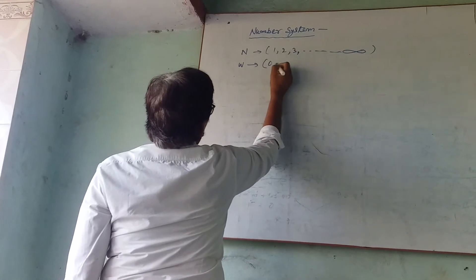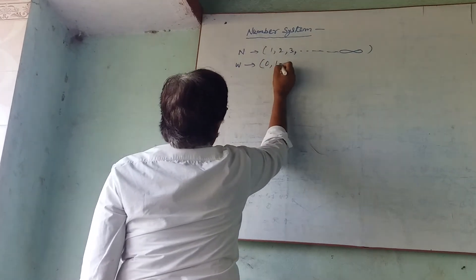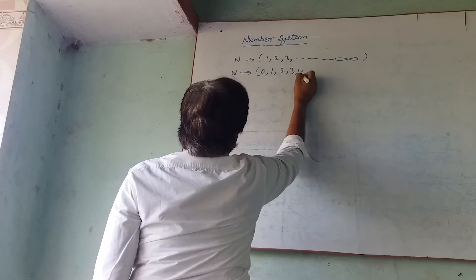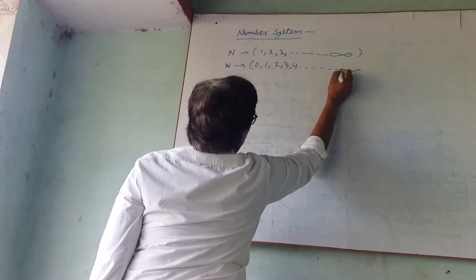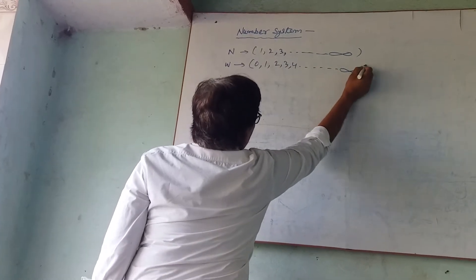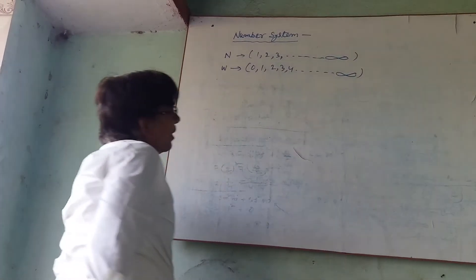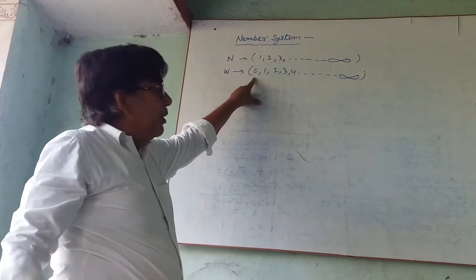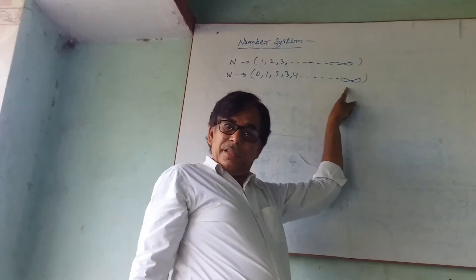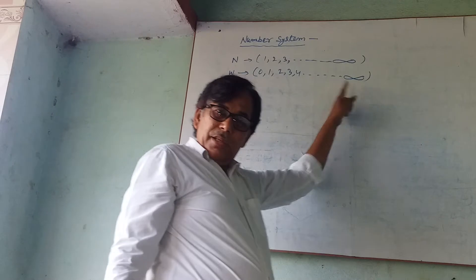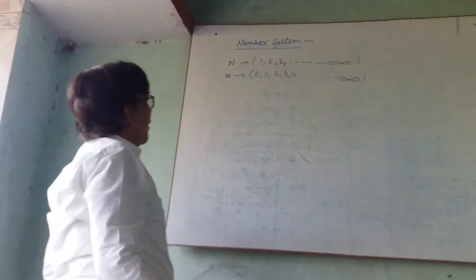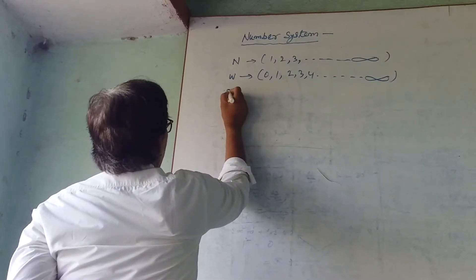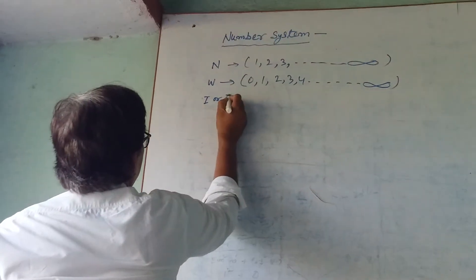Second, Whole Numbers, denoted by W. It is the set of {0, 1, 2, 3, 4, ...} to infinity. The smallest whole number is 0 and the largest is infinite.